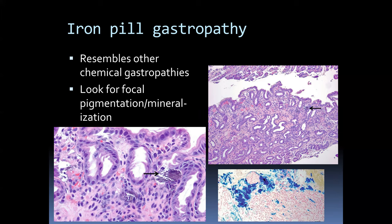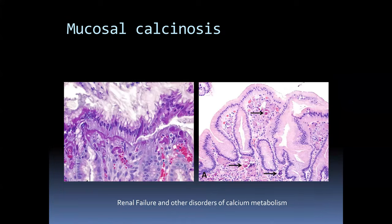Iron therapy is fairly widely employed and can produce a gastropathy similar to those already mentioned. What we look for is areas of mineralization — an early clue on H&E — and using the Prussian blue reaction (iron stain) you see dramatic blue-positive material representing iron. Other mineral disorders include mucosal calcinosis, seen on H&E and PAS, in patients with renal failure or calcium metabolism disorders such as parathyroid disease.